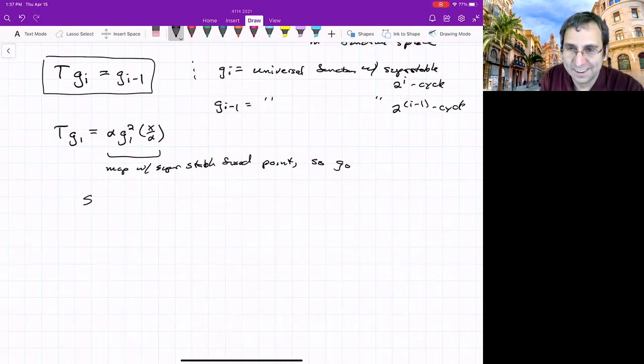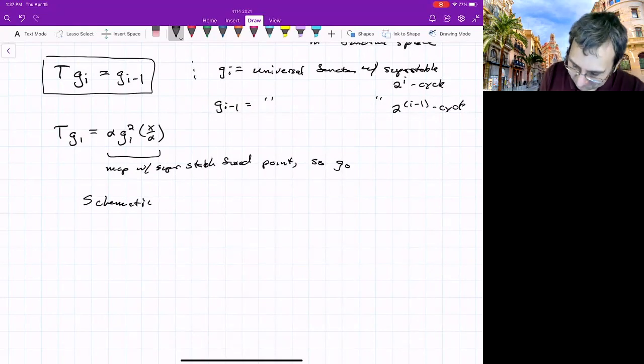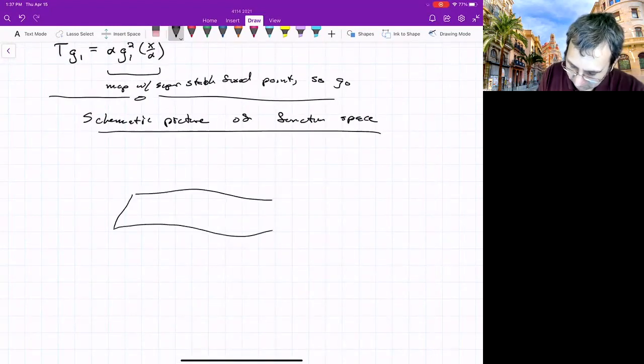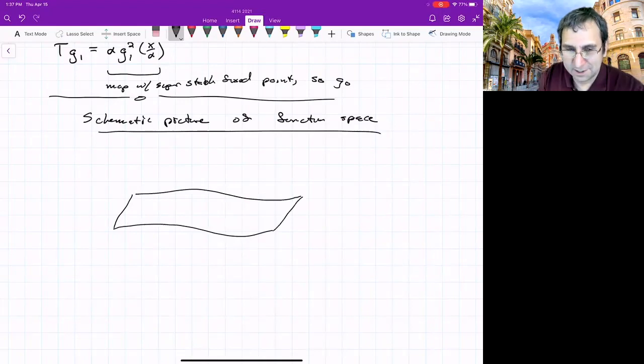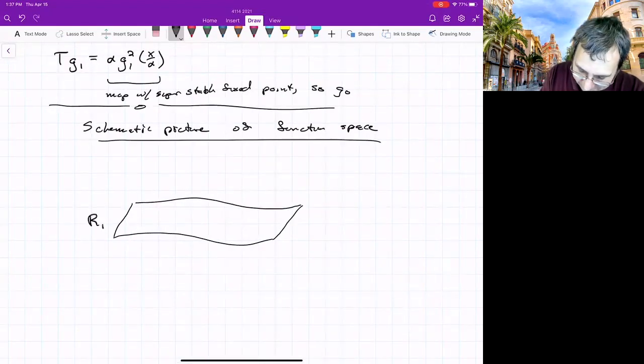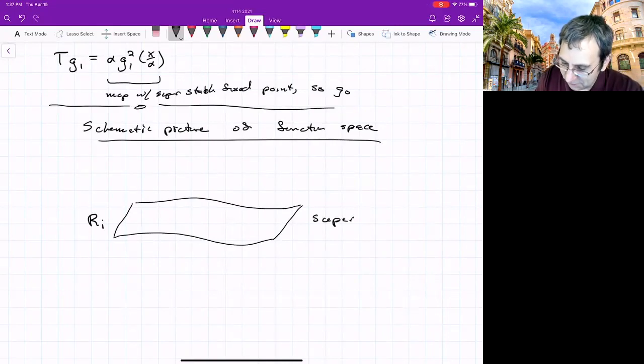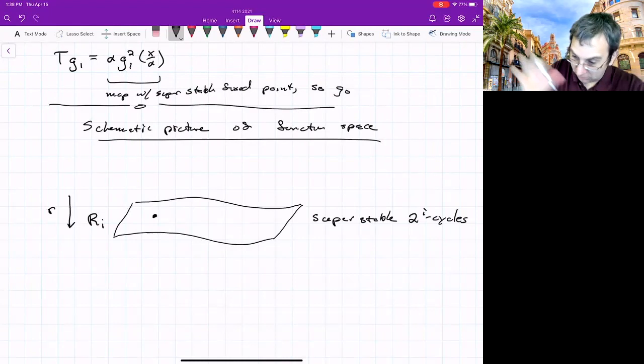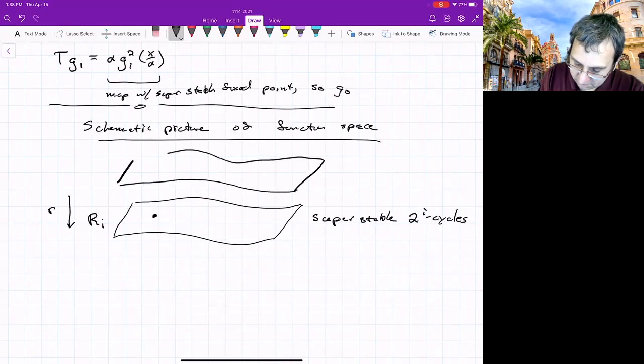So here now we can do a schematic of the picture in function space. We are building to what is delta. What is delta and where does it come from? And this is what's happening in function space. We've got things that look like surfaces, if you want, magic carpets. This is at the parameter value of r_i. So these are all of the maps with super stable 2 to the i cycles. So here would be like the logistic map. And abstractly, some direction in this space is corresponding to changing the parameters, parameter value of maps.